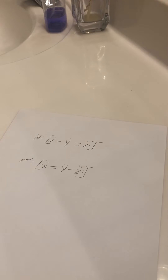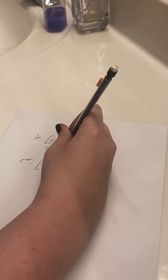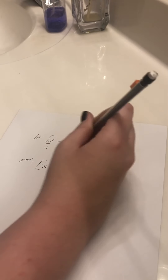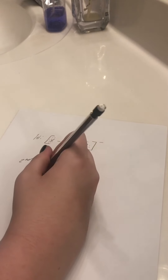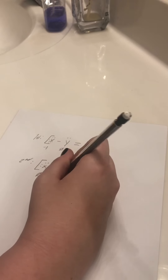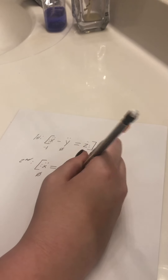Now I want to discuss how we pick the best option for resonance and formal charges. For the first structure, we got negative one, zero, zero. For the second structure, we got zero, zero, negative one.